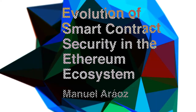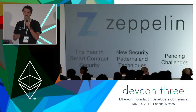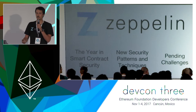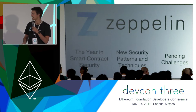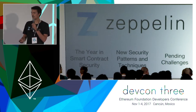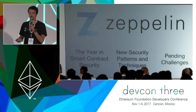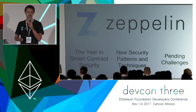Hey everyone, thank you. So for those of you who don't know us, at Zeppelin we build technology and provide services to help protect smart contract development. We're mostly well-known for our security audits, but we also have some products and we maintain the open Zeppelin repo of smart contracts. This talk will be divided: first I'm going to review last year since Devcon 2 in terms of how the smart contract ecosystem evolved, then focus on new techniques and patterns we've seen arising in the industry, and finally talk about some pending challenges in smart contract security and hint at some possible solutions we're working on.